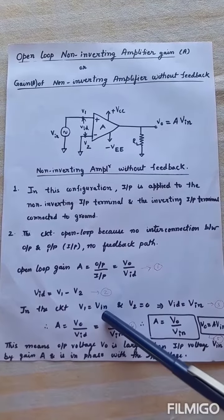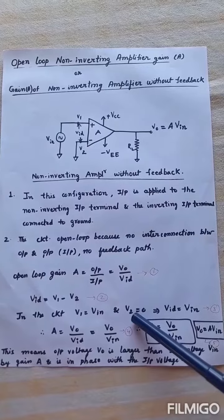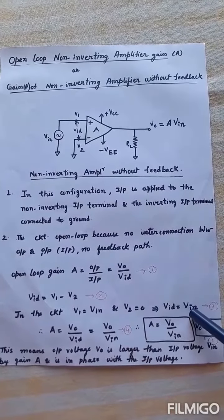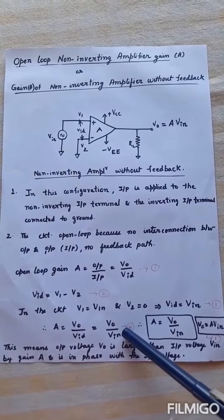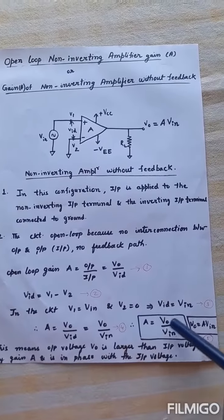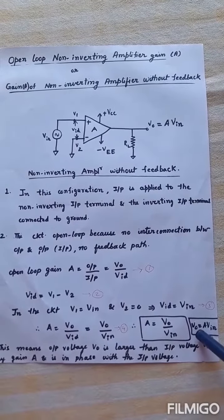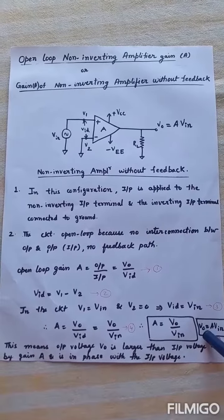V1 is Vin and V2 is equal to 0 because it is connected to ground. So Vid is written as Vin. So what is the open loop gain equation? Capital A is equal to V naught by Vin. On rearranging the terms, we get the output voltage V naught is equal to A times Vin.